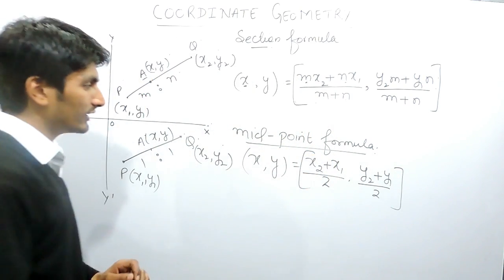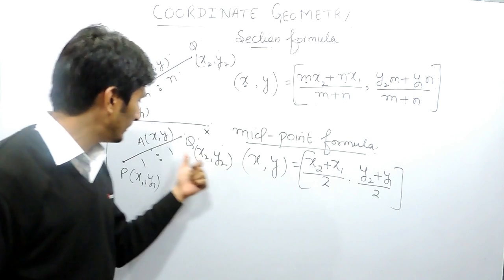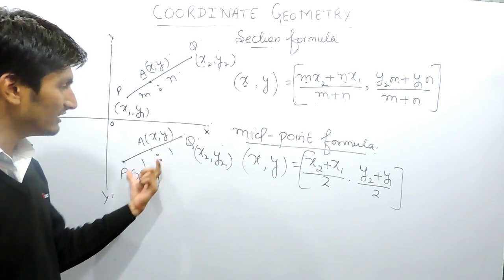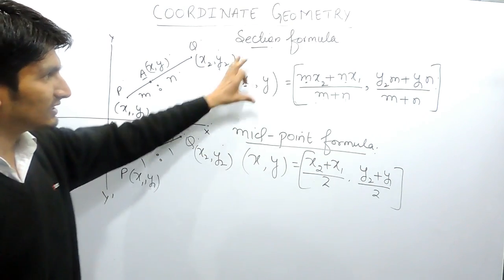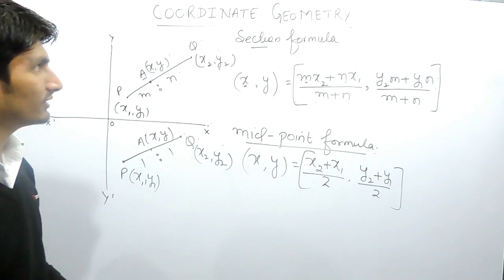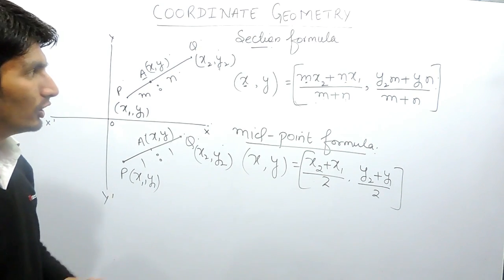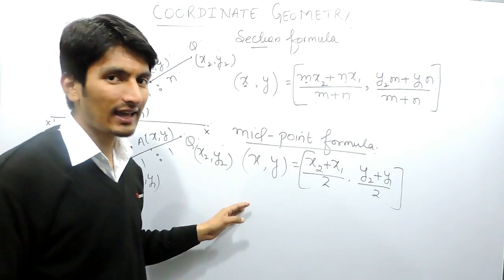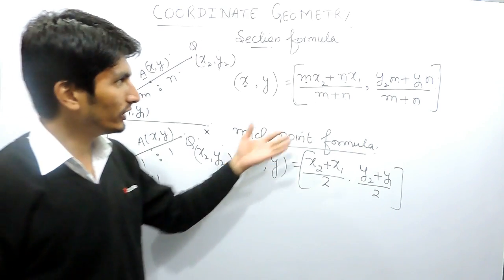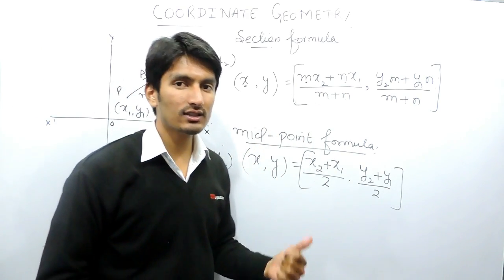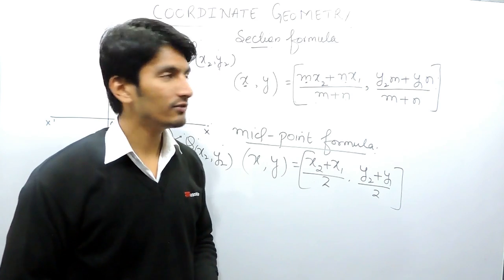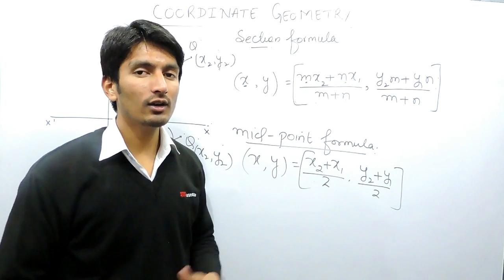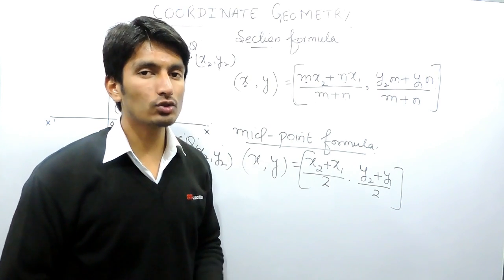So these are the coordinates for point A where A is dividing this line in equal ratio. These are the two formulas associated with the section formula. Questions based on this may be asked in your exams, so you need to remember these formulas. In the next video, we will discuss how questions are formed and how we can solve them.